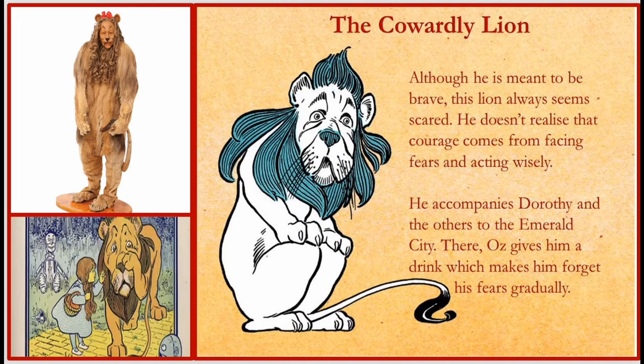The next character is the Cowardly Lion. Although he is meant to be brave, this lion always seems scared — he doesn't realize that courage comes from facing fears and acting wisely. He accompanies Dorothy and the others to the Emerald City, where Oz gives him a drink which makes him forget his fears gradually.